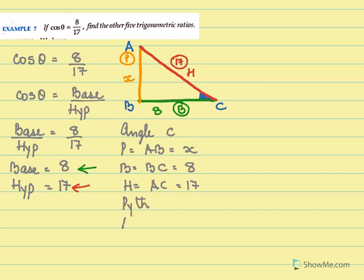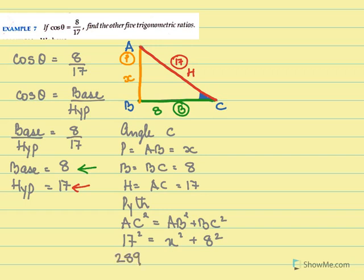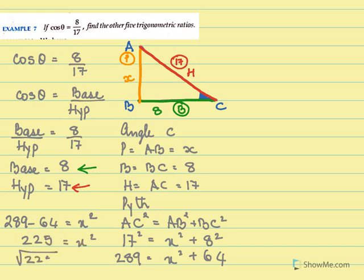For Pythagoras' theorem, I do hypotenuse square, that is AC square equal to AB square plus BC square. Now I put the values: 17 square equal to AB is X square, BC is 8 square. So 17 square is 289 equal to X square plus 64. Then 289 minus 64 equal to X square, that is 225 equal to X square, and the root of 225 is 15. So I have 15 equal to X. So my AB is now 15. Let me write my perpendicular as 15.